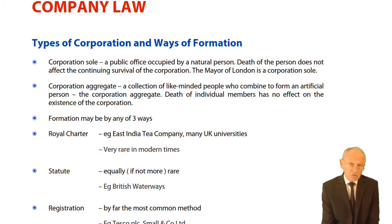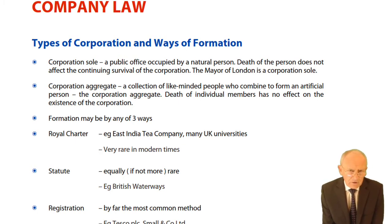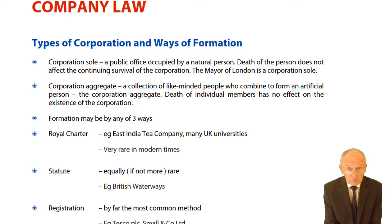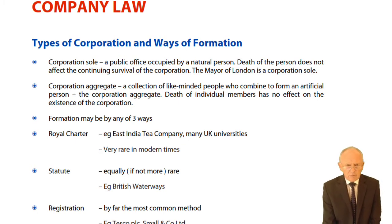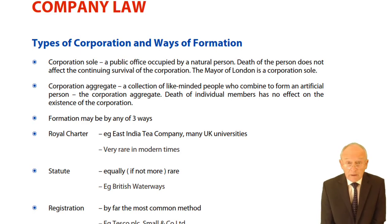The next type is by statute, where British Parliament would sit down and create a company by statute. Typically these companies had the word 'British' in front of them — British Steel, British Rail, British Waterways, British Coal. There were many of them until Margaret Thatcher came to power. These companies were owned by the public — owned by the government, which is representative of the people.